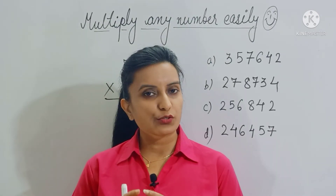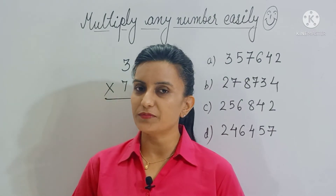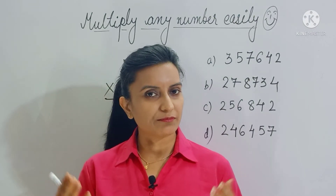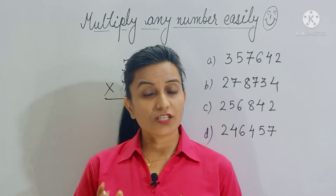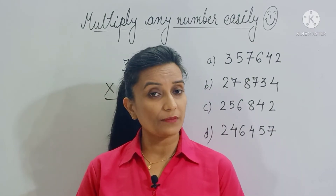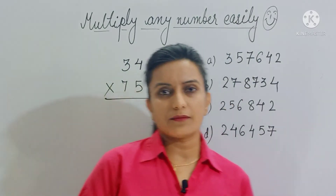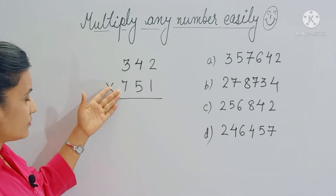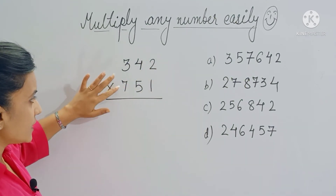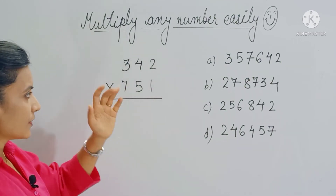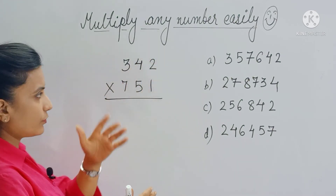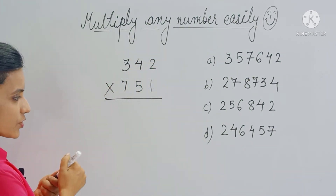You can see how easily we can multiply any numbers just by using some patterns — no working needed, everything done mentally, just write the final answer. This trick is especially useful for competitive exams. For example, if you have to multiply two numbers and pick the right option from multiple choices, you don't have to multiply completely — just do a few steps. Let's say this is a 3D by 3D multiplication, so we follow i, cross, star.